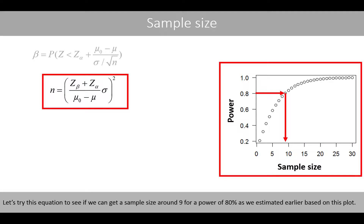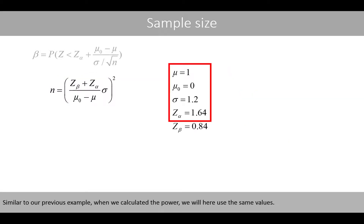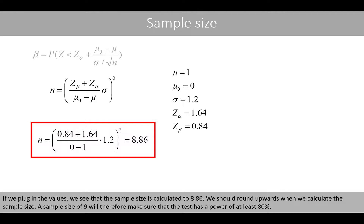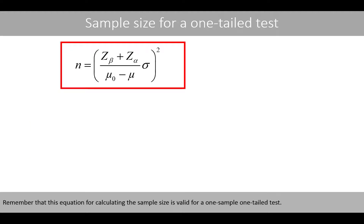Let's try this equation to see if we can get the sample size around 9 for a power of 80%, as we estimated earlier based on the plot. Similar to our previous example when we calculated the power, we'll use the same values. The difference is that we now would like to calculate the sample size to get a power of 80%. A power of 80% corresponds to a z-score of 0.84, which is our value for z-beta. If we plug in the values, we see that the sample size is calculated to 8.86. We should always round upwards when we calculate the sample size. A sample size of 9 will therefore make sure that the test has a power of at least 80%. Remember that this equation for calculating the sample size is valid for a one-sample one-tailed test.